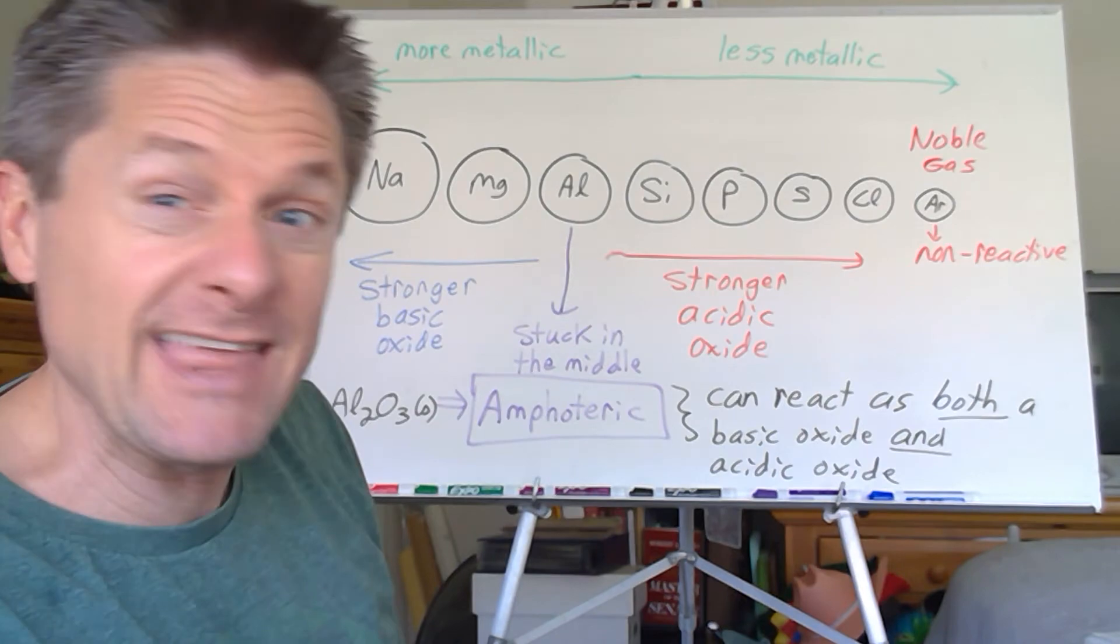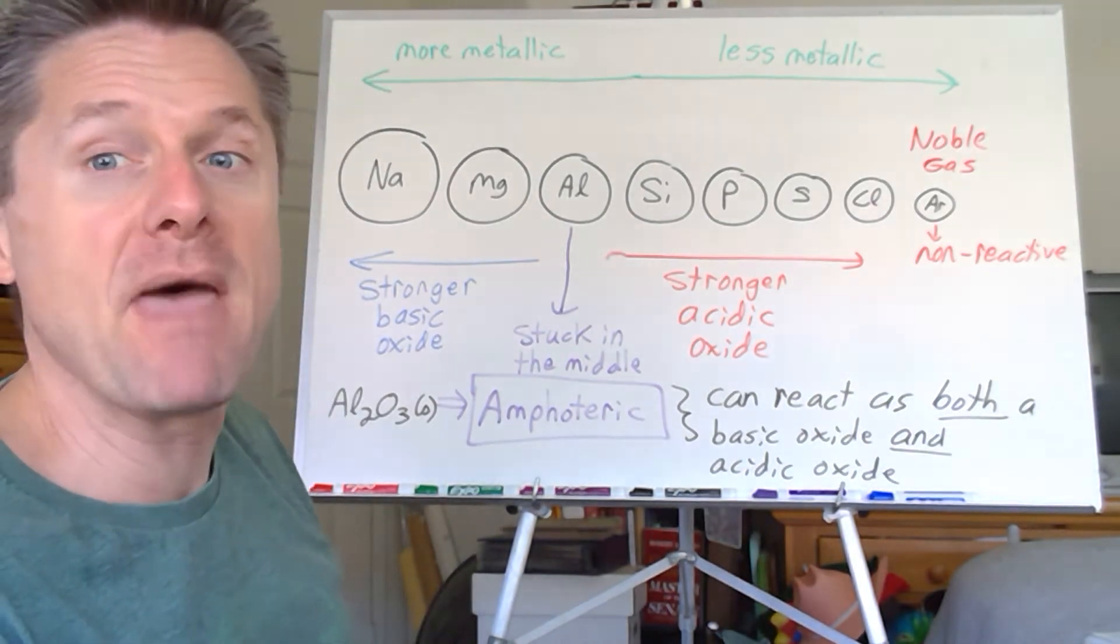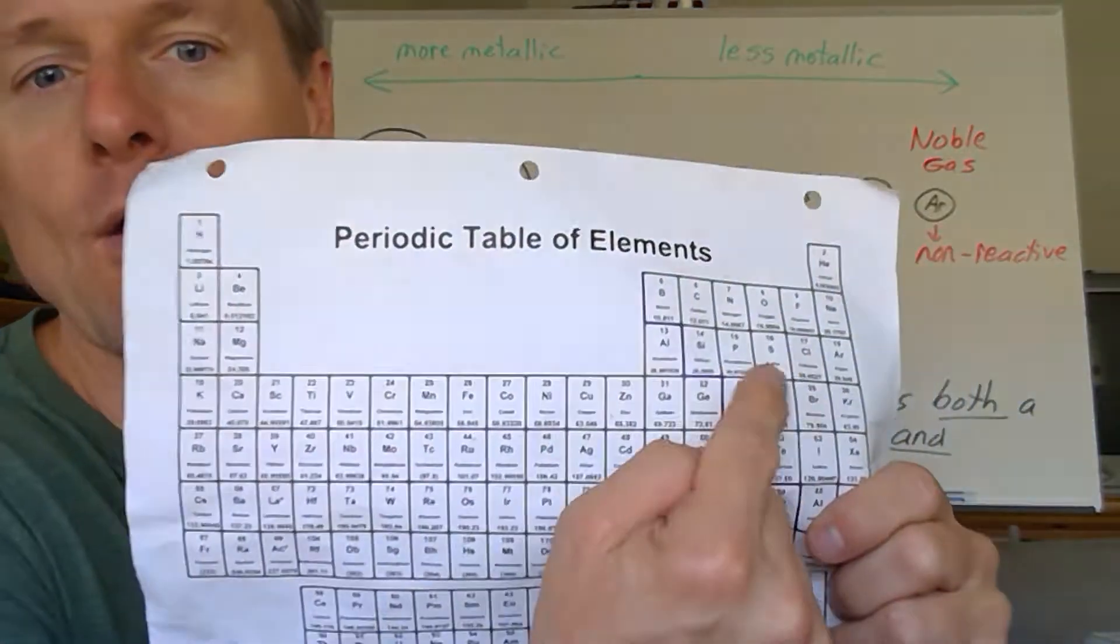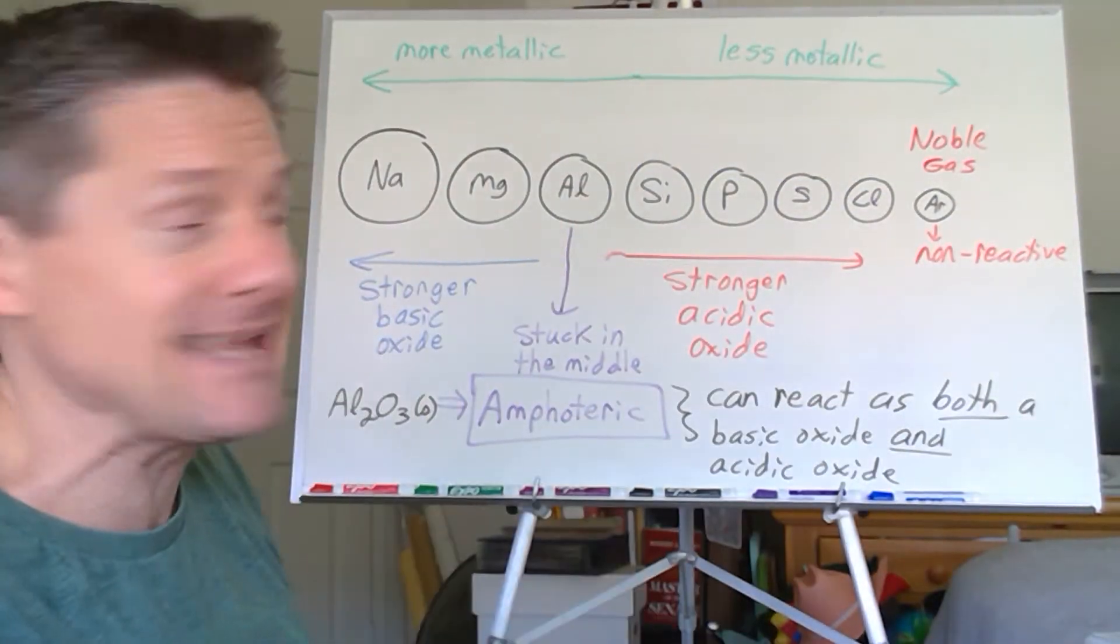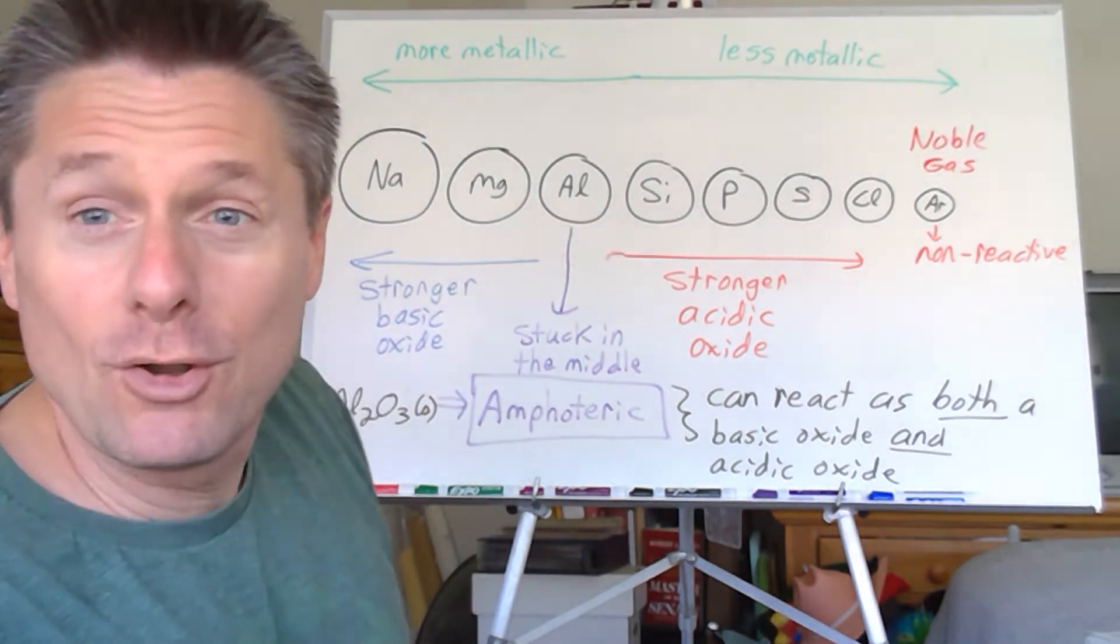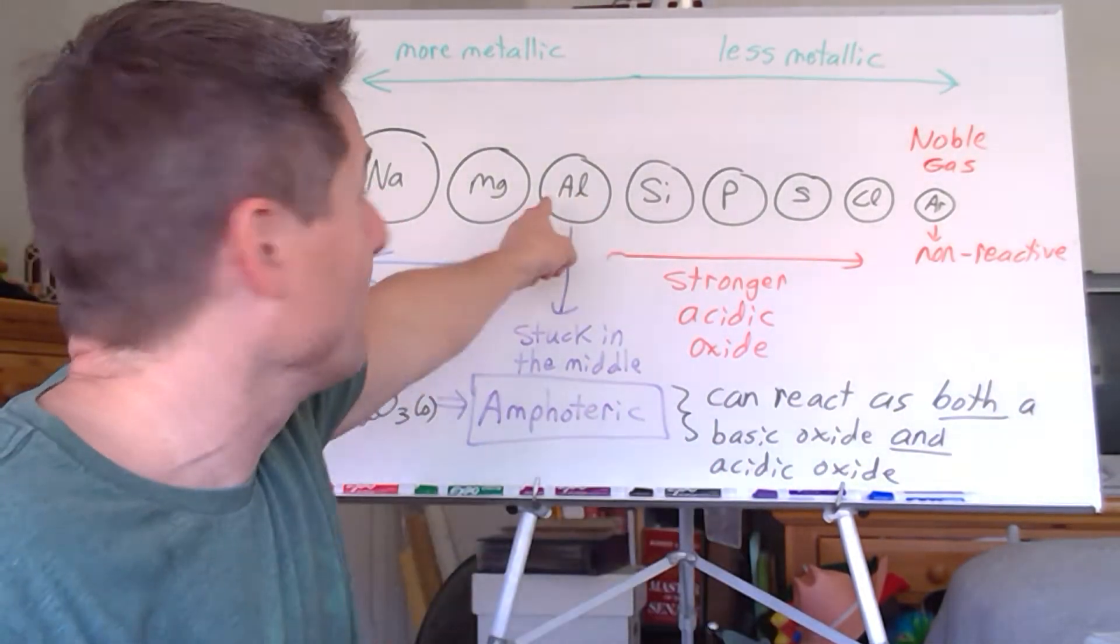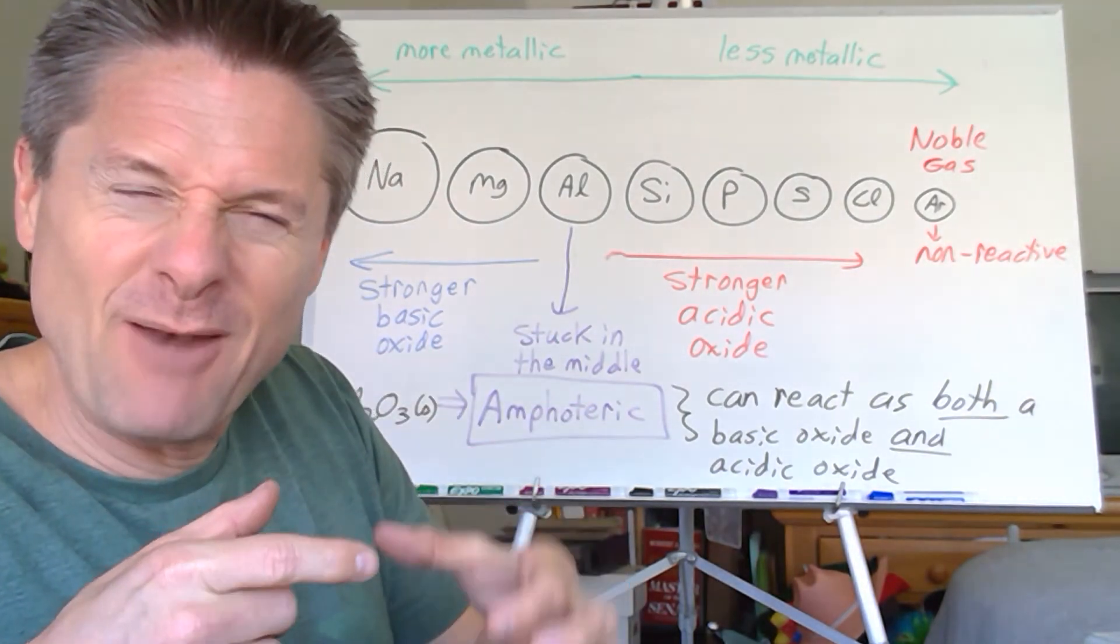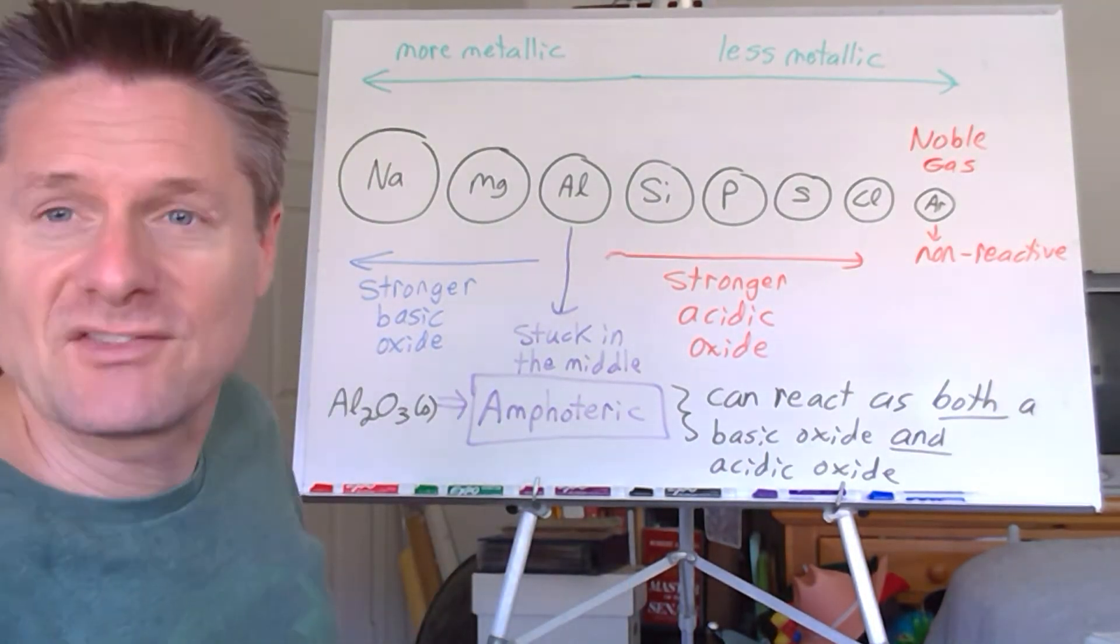But aluminum, you would think would be a basic oxide because it's a metal. But it's a metal that's way over here. It's less metallic than these babies. It's less reactive, right? What are our aluminum, what are our soda pop cans made out of aluminum with a really nasty plastic layer in there?